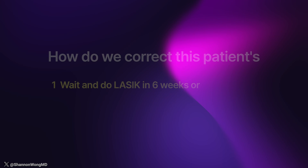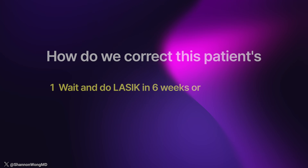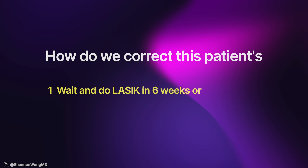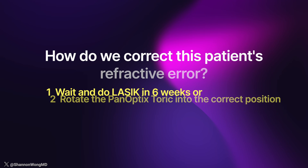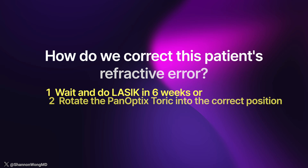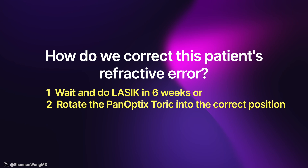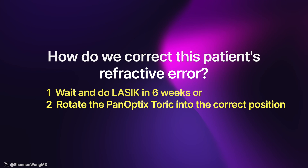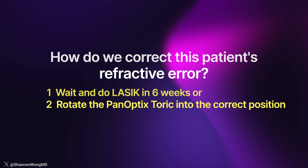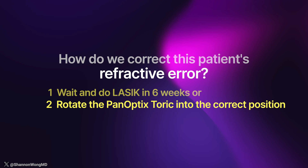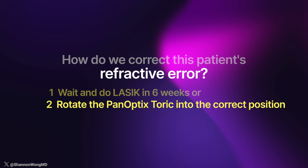How do we correct this patient's refractive error? We have two easy surgical options. Number one, we could wait and do LASIK in about six weeks once the eye has had enough time to heal and stabilize. Or number two, we could rotate the Panoptix Toric into the correct position to bring him into focus.